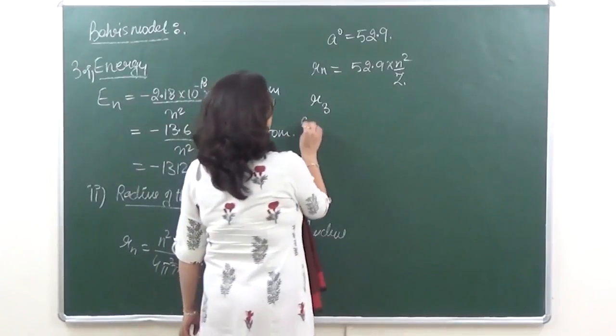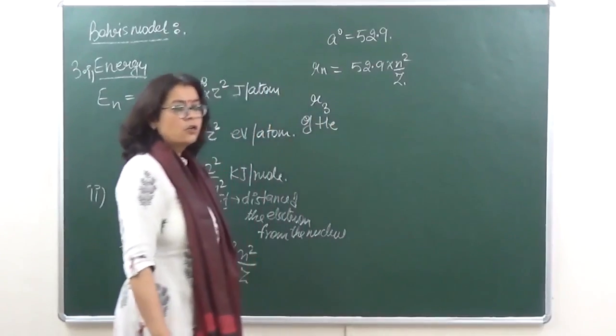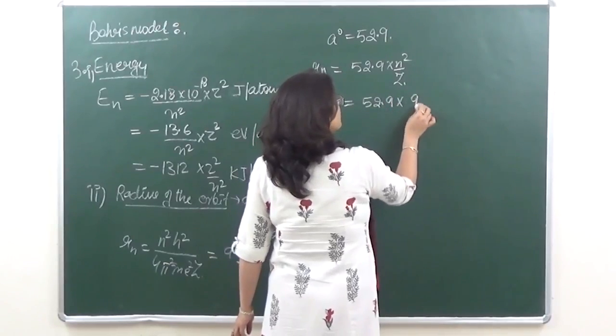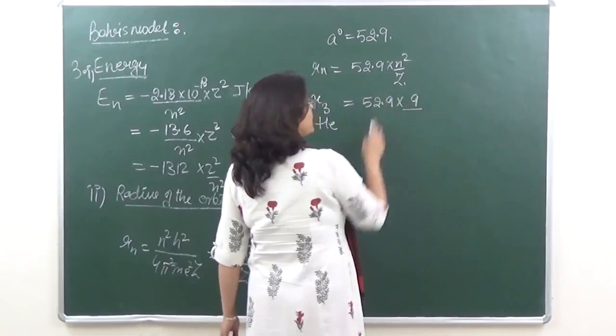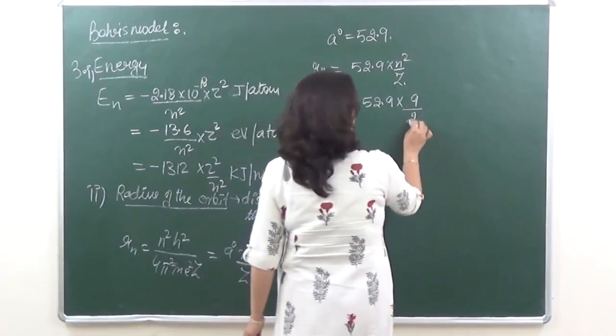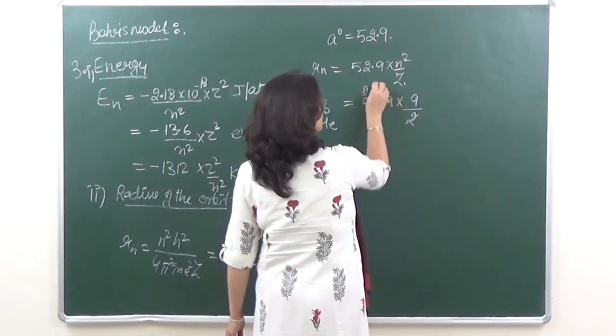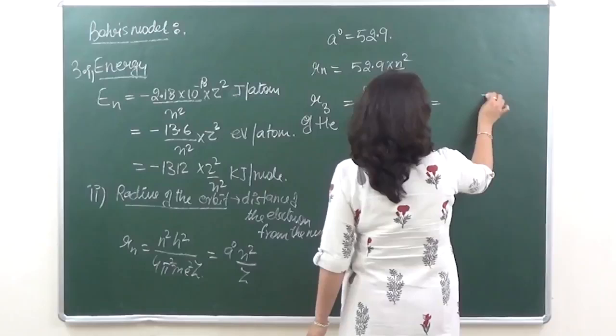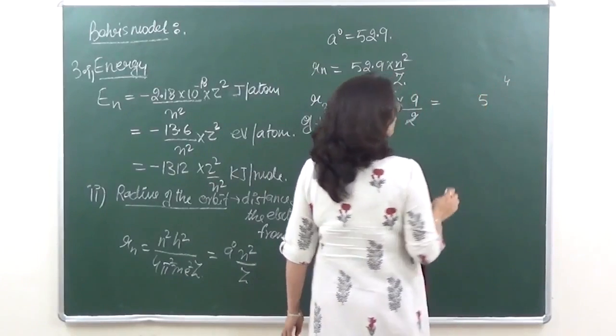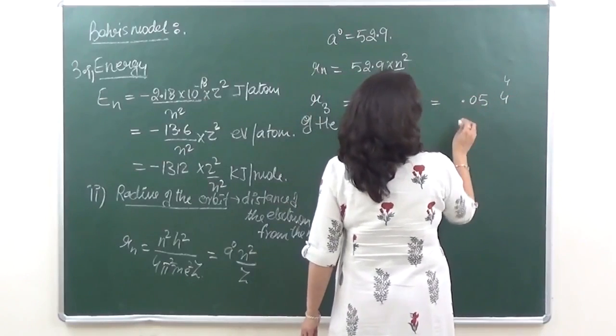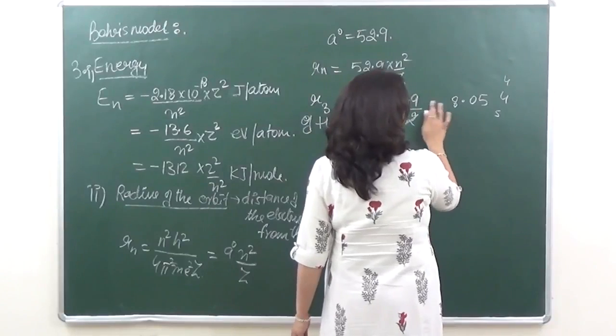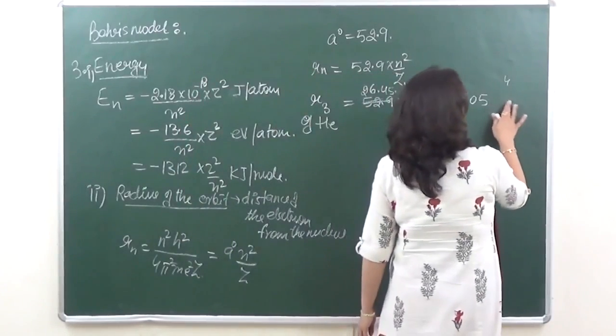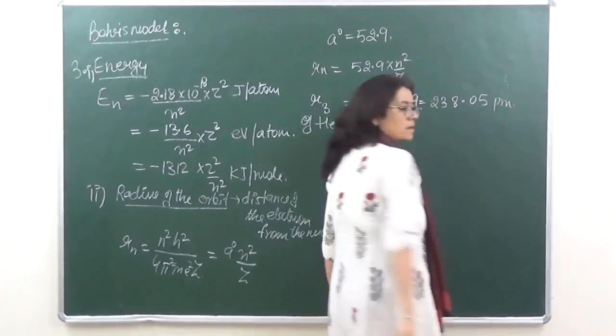So third orbit of say helium - helium 3rd orbit ki radius calculate karni hai. So 52.9 into 3 squared that is 9, and helium ka z is equal to 2. So this will be equal to 9 times 5 is 45, 9 times 4 is 36, and so on. So the answer comes to 238.05 picometers.